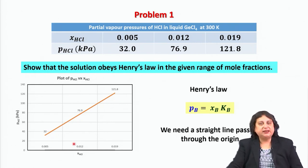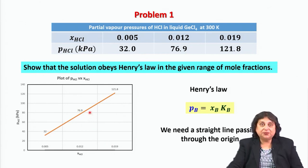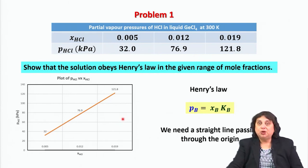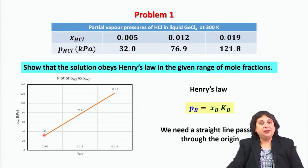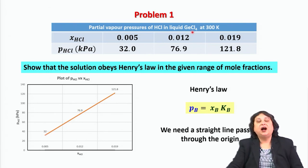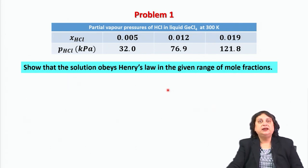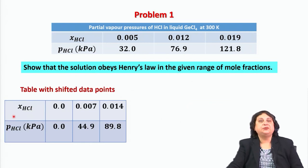As presented in the plot, the straight line does not pass through the origin because if I extrapolate very close to 0, I find a positive intercept. To make this straight line pass through the origin, I can choose the very first data point as the origin. In that case, x₀ = 0.005 and y₀ = 32.0, and I will shift the other data points accordingly so the shifted data table looks like this.